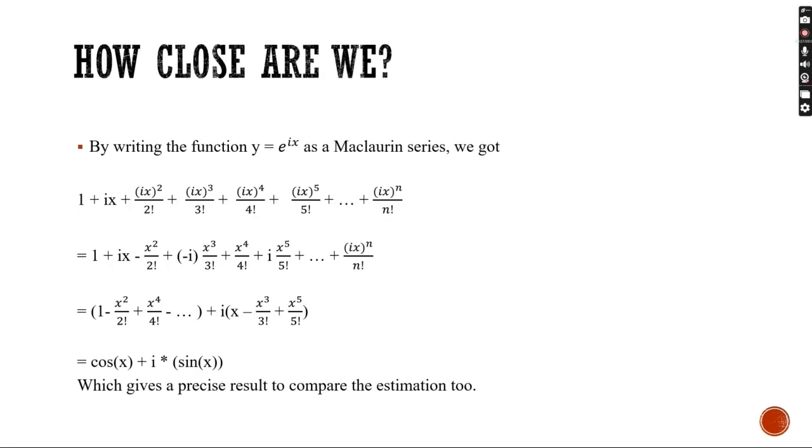How close are we? By writing the function y equals e to the ix as a Maclaurin series, we get 1 plus ix plus ix squared over 2 factorial plus ix cubed over 3 factorial, and so on. And this ultimately gives us cosine x plus i times sine x after further simplification. This gives us a precise result to compare the estimation to.